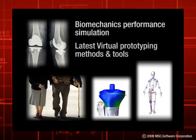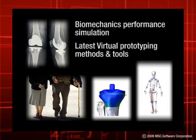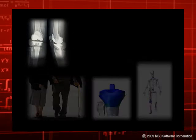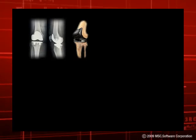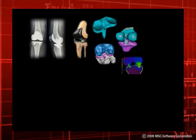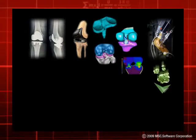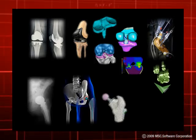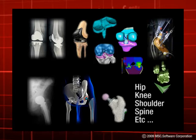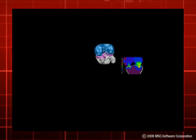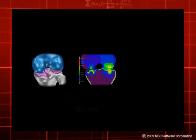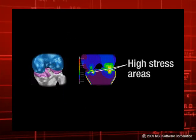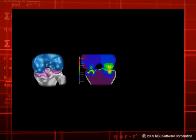By adopting the latest virtual prototyping methods and tools, manufacturers can gain a huge competitive advantage. For instance, orthopedic implant manufacturers are performing virtual prototyping to minimize the cost of physical testing. Finite element analysis, for example, is performed on hip, knee, shoulder, and spinal implants. A series of stress analyses are done on the implants and surrounding bone to examine high stress areas, and this information is used for further analyses to study strength, durability, and wear of the implant.